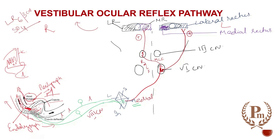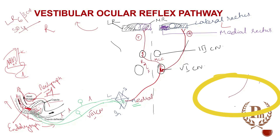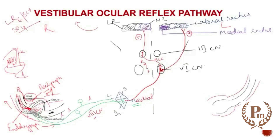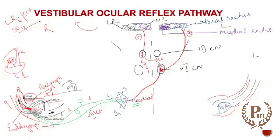When rotating the head to the right, not only is the right semicircular canal activated — the left semicircular canal is also involved. The left side has the bony labyrinth, membranous labyrinth, perilymph, endolymph, cristae, and cupula with afferent nerve fibers. Looking at the cristae on the left side: when the head moves to the right, on the right the stereocilia move towards the kinocilium, but on the left side the movement is in the opposite direction.